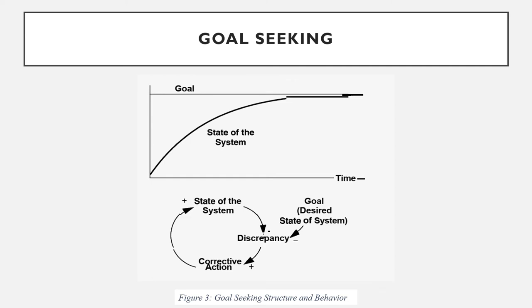Figure 3 provides an example of goal-seeking structure and behavior. Positive feedback loops generate growth, amplify deviations, and reinforce change.